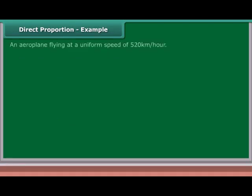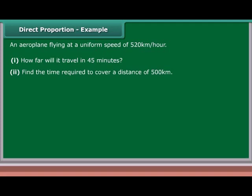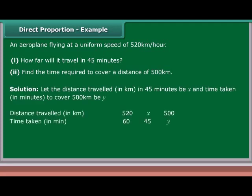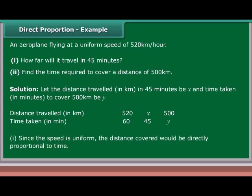Example: An airplane flying at a uniform speed of 520 km per hour — how far will it travel in 45 minutes? Also find the time required to cover a distance of 500 km. Solution: Let the distance traveled in 45 minutes be x km, and time taken to cover 500 km be y minutes. Since the speed is uniform, the distance covered would be directly proportional to time.